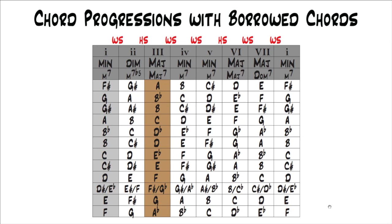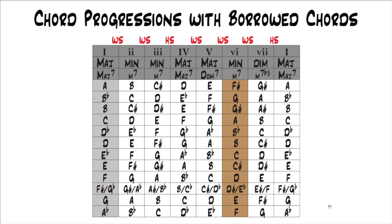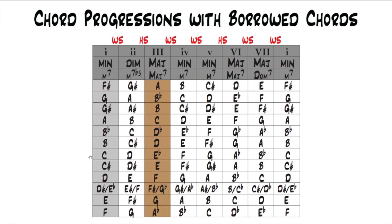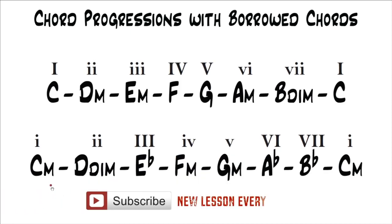Now I'm going to talk about something called parallel minor, which is a really easy concept. For example, the key of C major — its parallel minor is the minor that starts with the same name. C minor is the parallel minor of C major. So basically, instead of being C major, you're making it C minor. The key of C major is: C, D minor, E minor, F, G, A minor, B diminished.